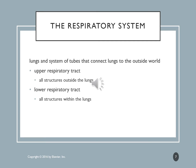The upper respiratory tract includes everything outside of the lungs — all the way up to the nose, nares, larynx, and pharynx. The lower respiratory tract is the structures within the lungs: the alveoli and the lower bronchial tree, bronchioles, and so on.